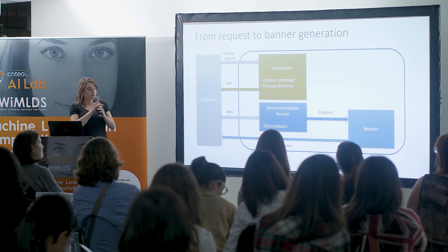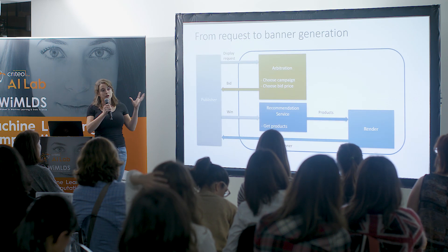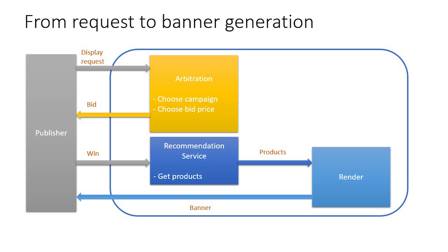Whenever we receive a request, first it goes through arbitration — where we choose for which campaign and which partner we're going to display the ad — and determine the best bid price depending on how likely we think the person is going to click or convert after click. Then after there's a win, we go to the recommendation service, where the goal is to select the best products for this given campaign. Those products will then be rendered into a banner HTML — and we're starting to do video as well.